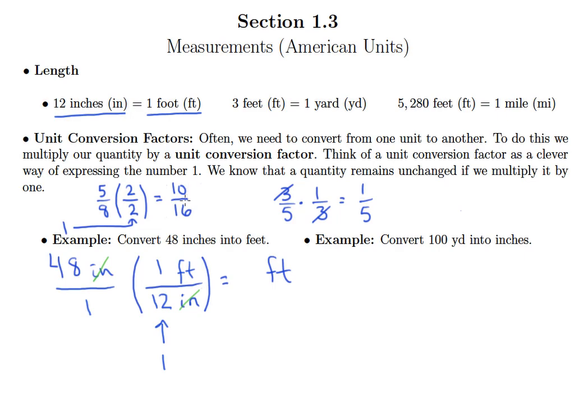The only thing left to do here is go ahead and carry out the operation. I have a 48 on top, a 12 on bottom. I'll go ahead and just write it like this: 48 over 12, and then you can do your division here over on the side and it turns out the 12 goes into 48 exactly 4 times. So what we end up with here is that 48 inches is equal to 4 feet.